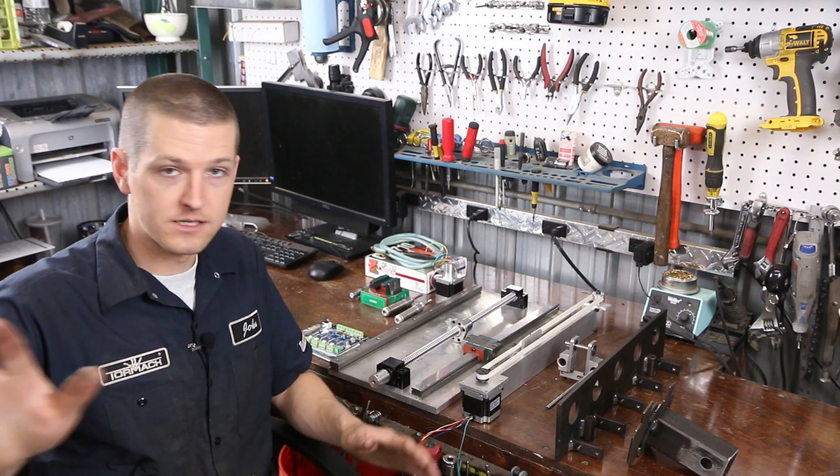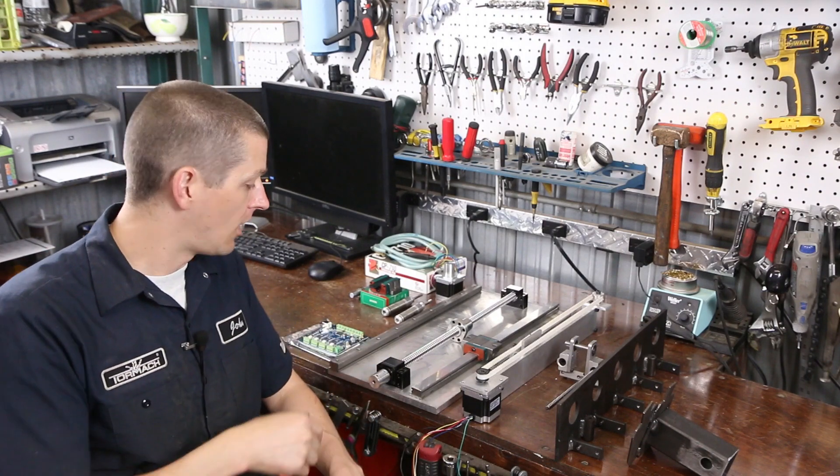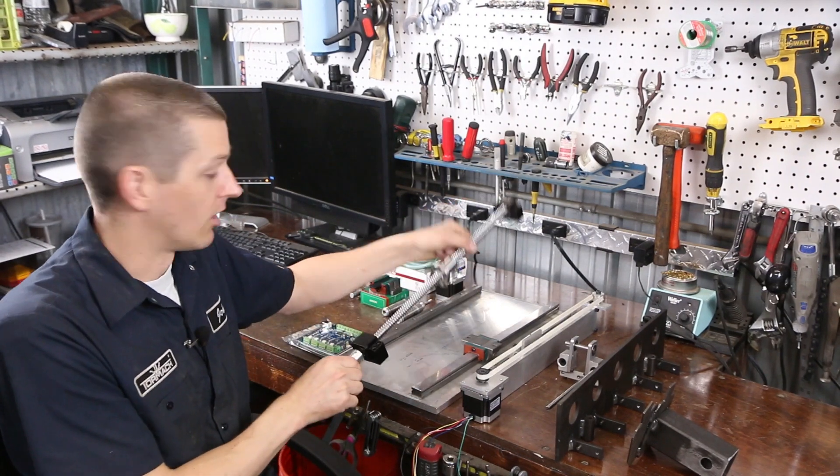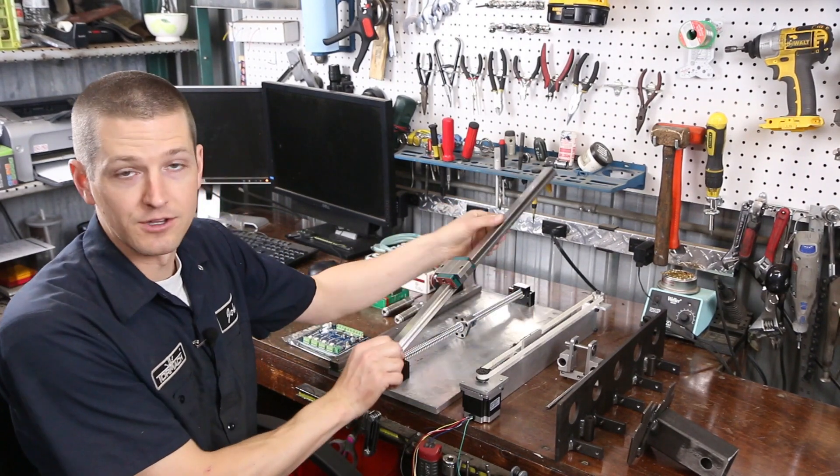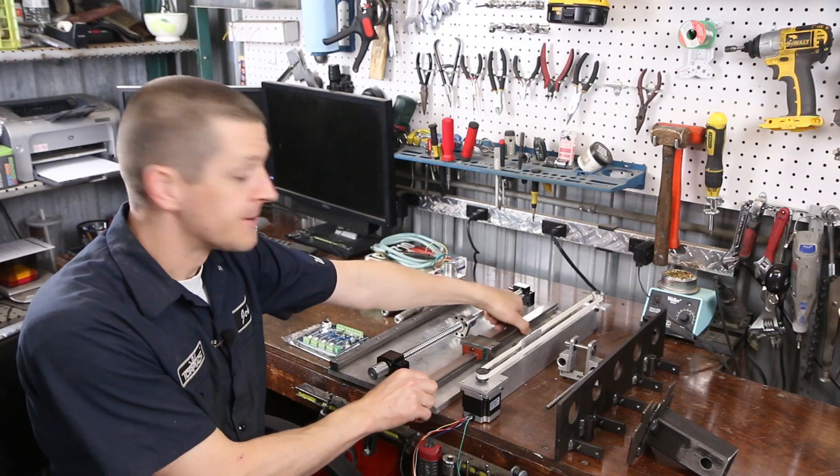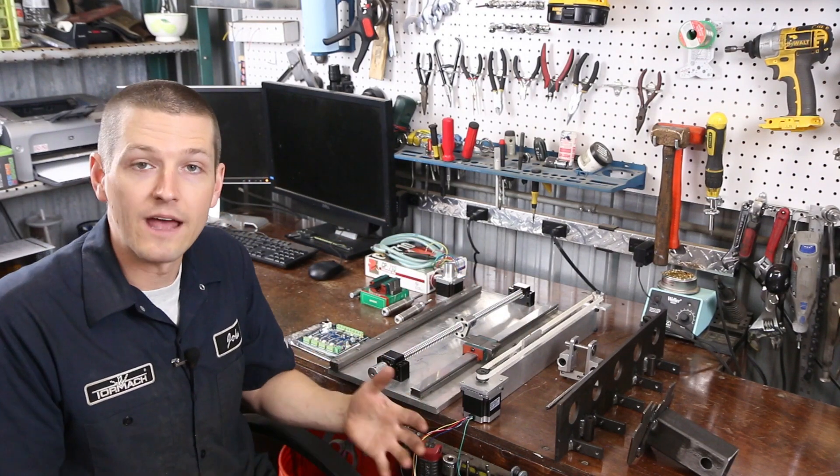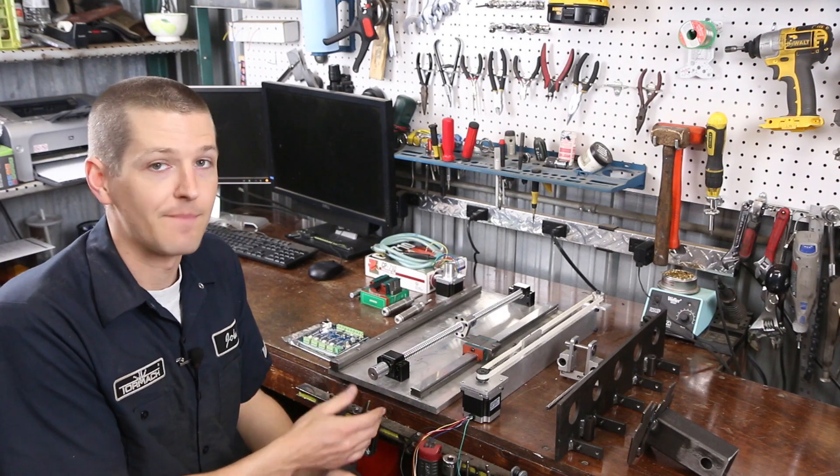All the links are going to be in the video description below, but you're looking at things like the ball screw set here, $150. These linear rails, $200, $300 total. So it's not inexpensive. You're going to have easily $1,000 in a little machine like that.